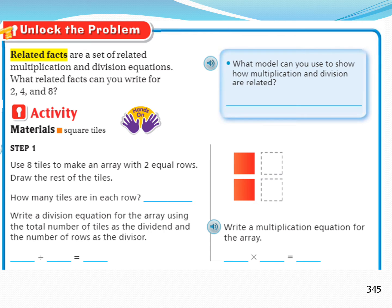Now, my lovely students, please open your books on page 345. Unlock the problem. Let's remember, related facts are a set of related multiplication and division equations. What related facts can you write for 2, 4, and 8? What model can you use to show how multiplication and division are related? Excellent! We can use an array.